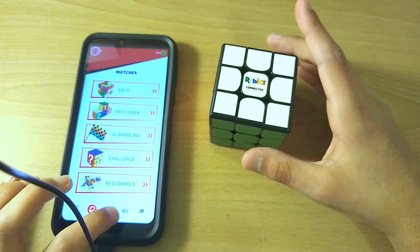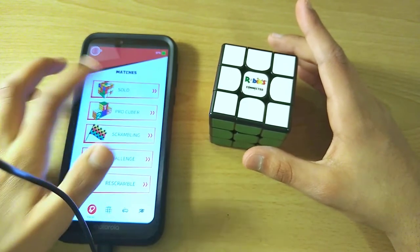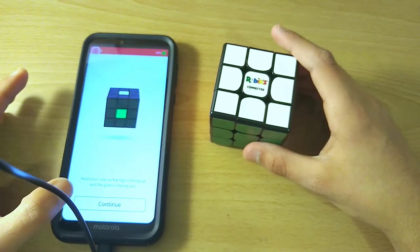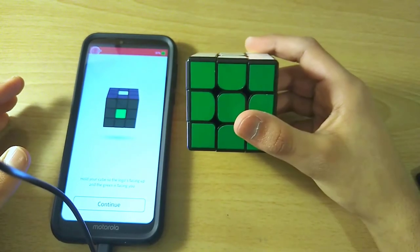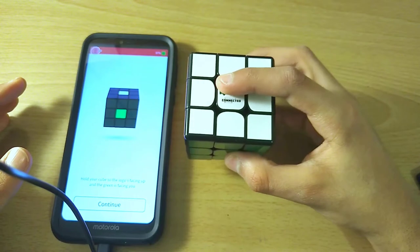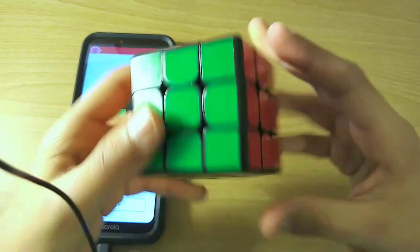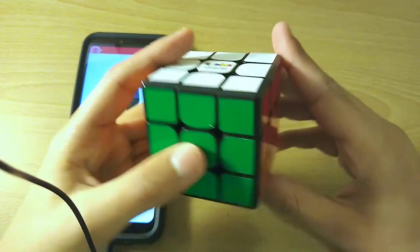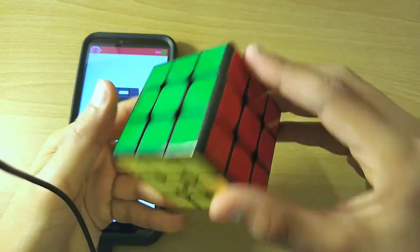So basically here, I'm just gonna hop into a solo thing to show you how it works. So you hold it so that the green side is facing you, and the white side is on top, because it doesn't have a gyroscope. So you just hold it like this. And actually, before I keep going, I'm gonna do some turning.